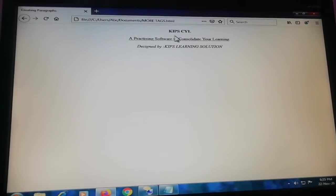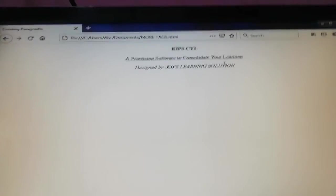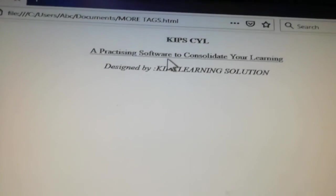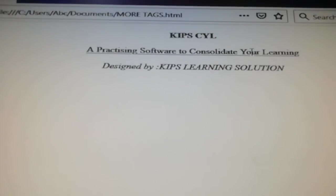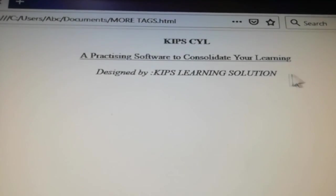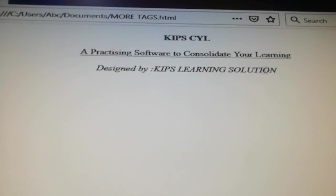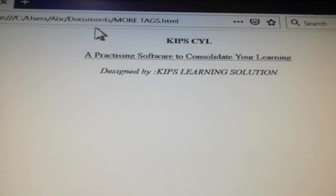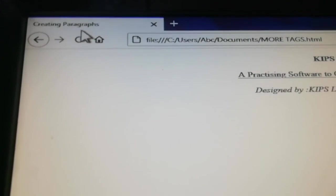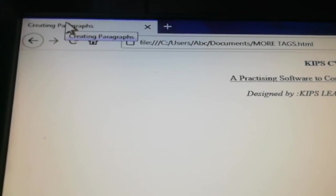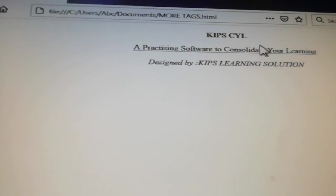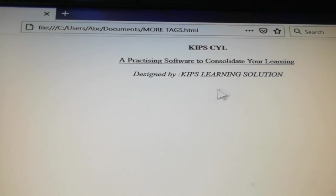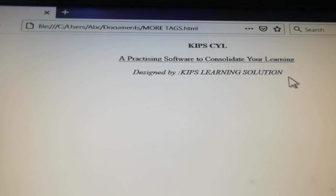You can see here all these are written at the center. The first line is with the bold effect. Next line is with the underline that we have used underline tag for. And the last line is written with the italic style. And you can see here, this is the heading that you have written in the title tag. So here you can see the use of bold tag, center tag, as well as the use of underline tag and the italic tag.